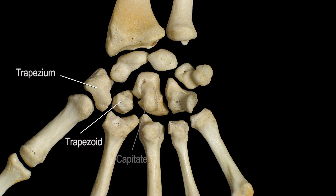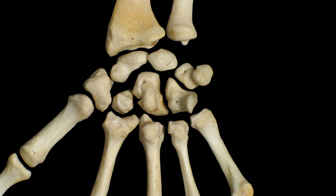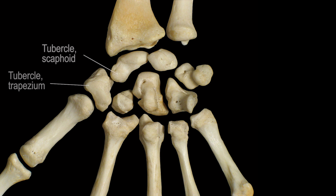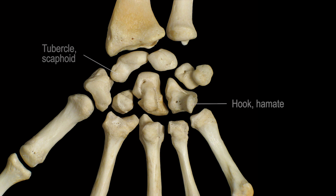Trapezium, trapezoid, capitate, and hamate are in the distal row. Three prominent bony landmarks for the carpal bones are the tubercle of the trapezium here, the tubercle of the scaphoid here, and the hook of the hamate over here.